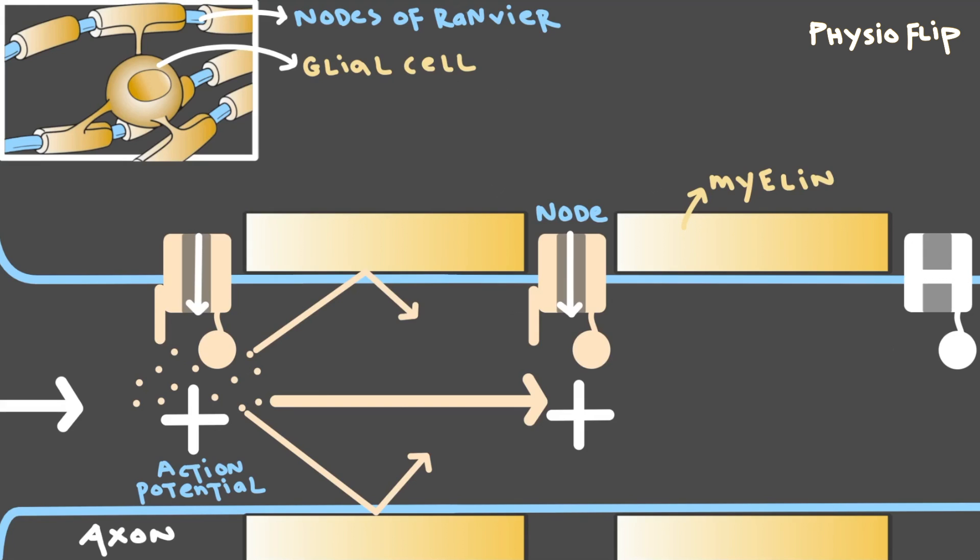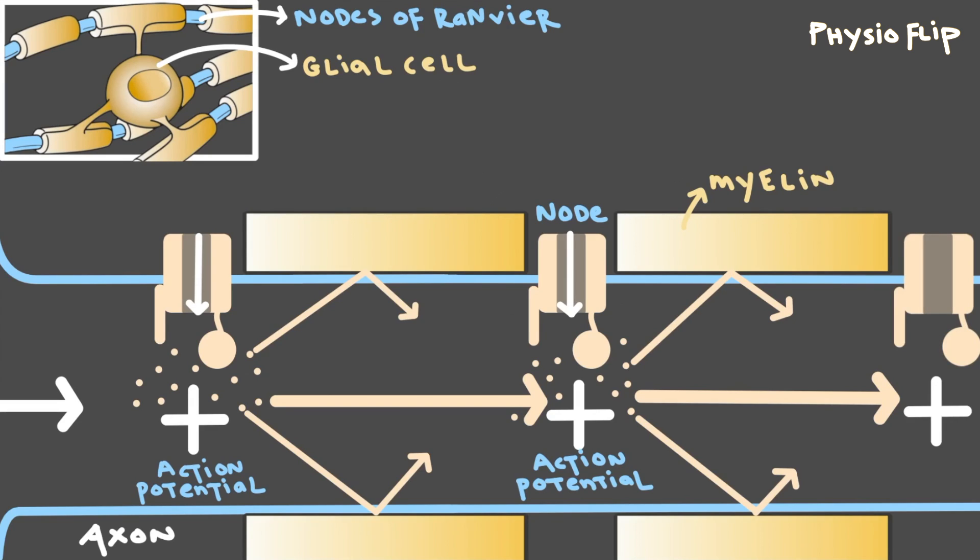Then we just do the same thing over again. Sodium ions enter the axon at the next node, starting another action potential, and this positive charge will diffuse quickly through the next section of myelin, losing very little strength thanks to the myelin insulating the axon. Eventually that signal reaches the final node and continues the electrical signal down the line.